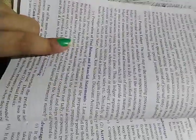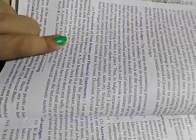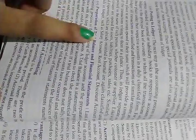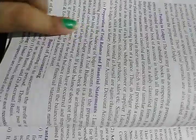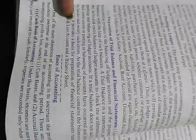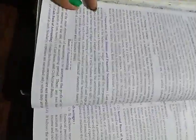Financial statements consist of three accounts: number one, trading account; number two, profit and loss account; and the last one is the balance sheet. When the balance sheet is made, our accounts close. Now, number one is the cash basis of accounting. Under this basis, incomes are not recorded unless they are received in cash.